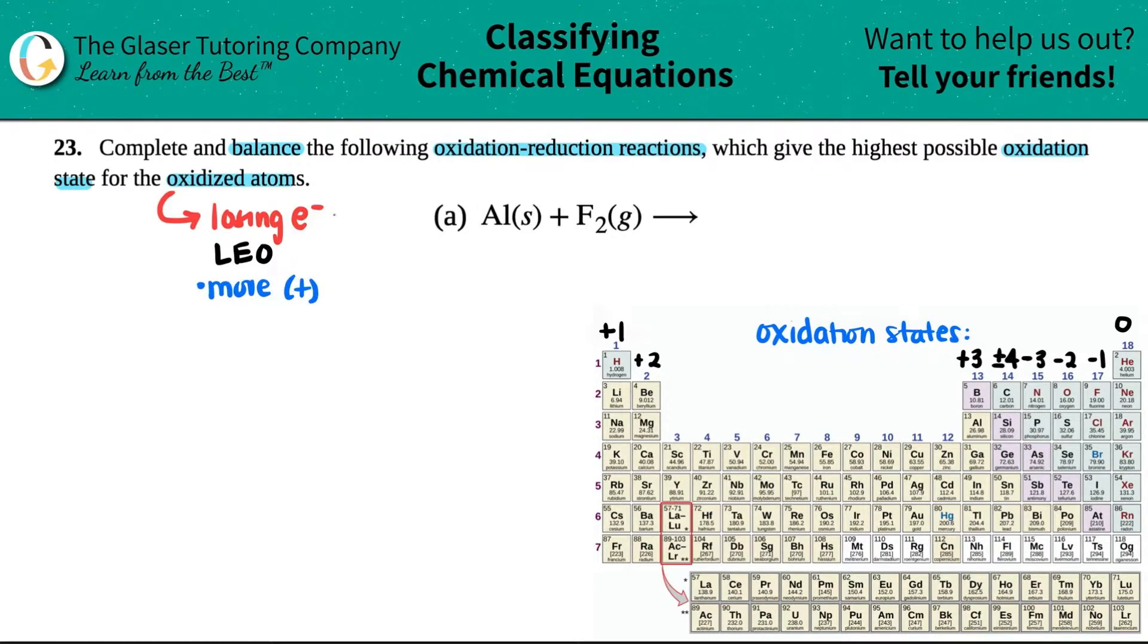So just a couple of things that we should know before we get into this problem. So we have this problem here, and I'm going to write it on the left-hand side. We have aluminum, which is a solid, plus fluorine, which is a gas. And we need to know what the product is. Now, this is a synthesis reaction because I have two independent atoms. I have aluminum and I have fluorine and they're going to come together to form one compound. That's a synthesis reaction.